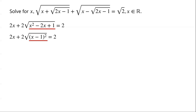So we can now write: 2x plus 2 times the modulus of (x−1) equals 2. Dividing the equation by 2, we have x plus |x−1| equals 1.